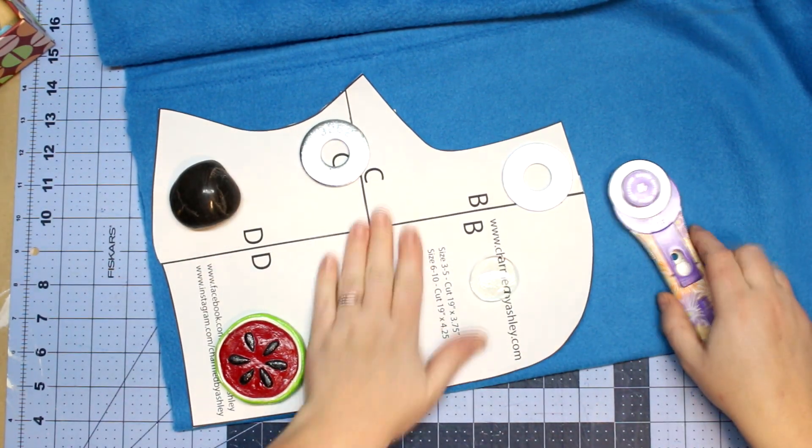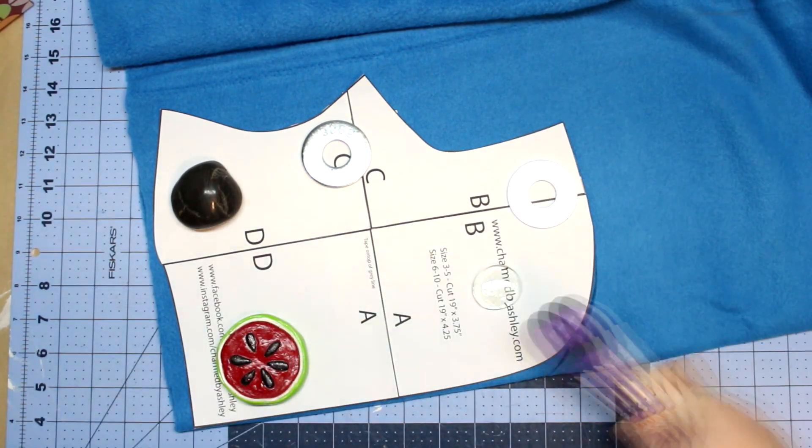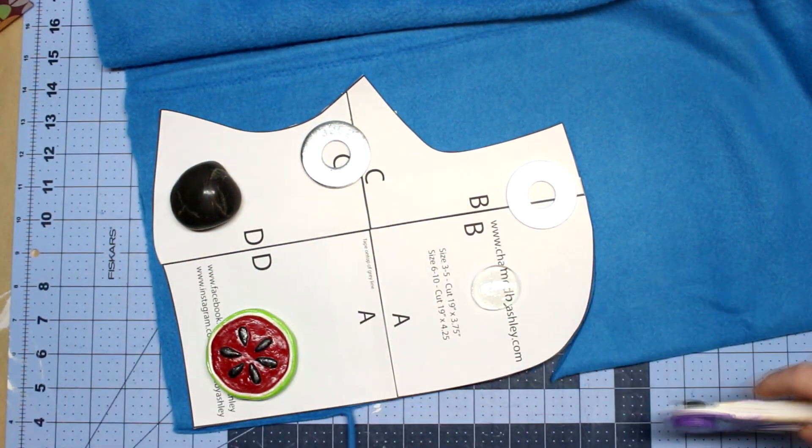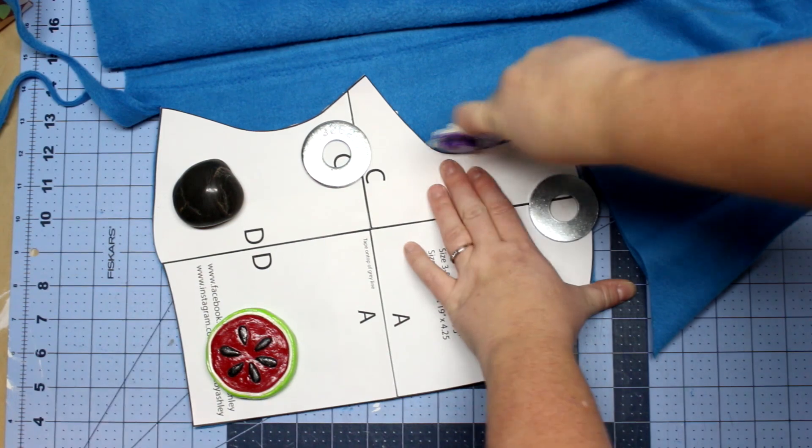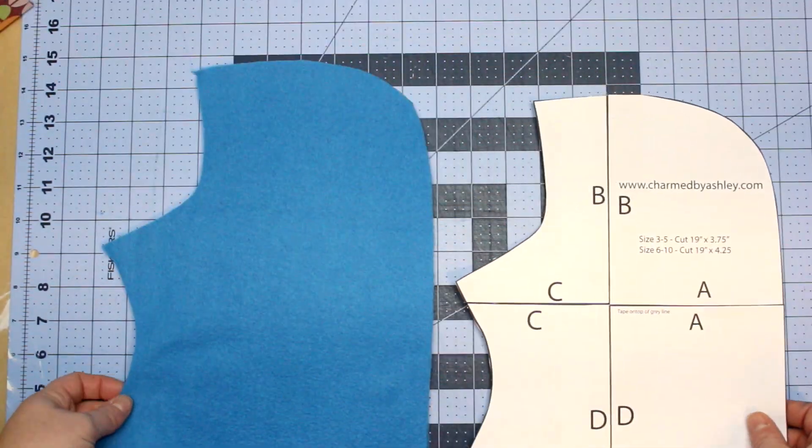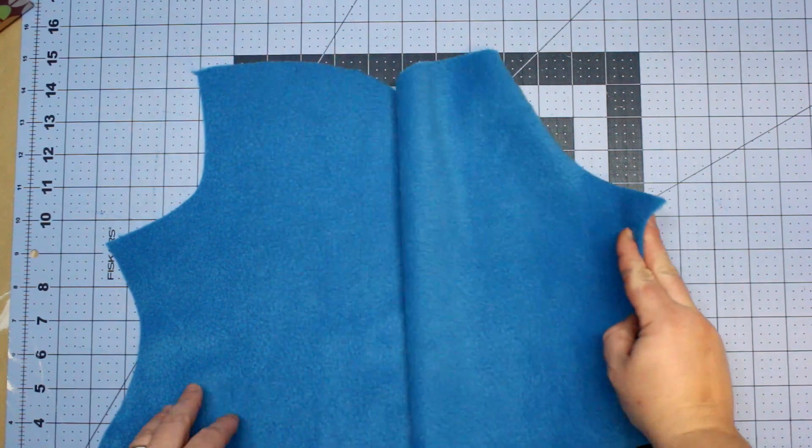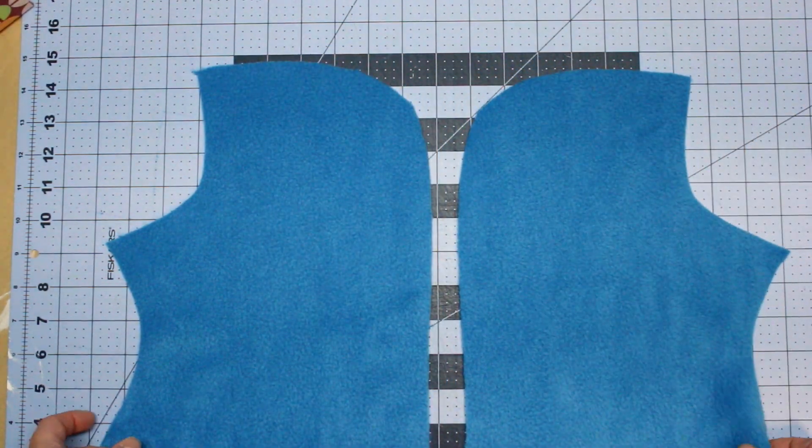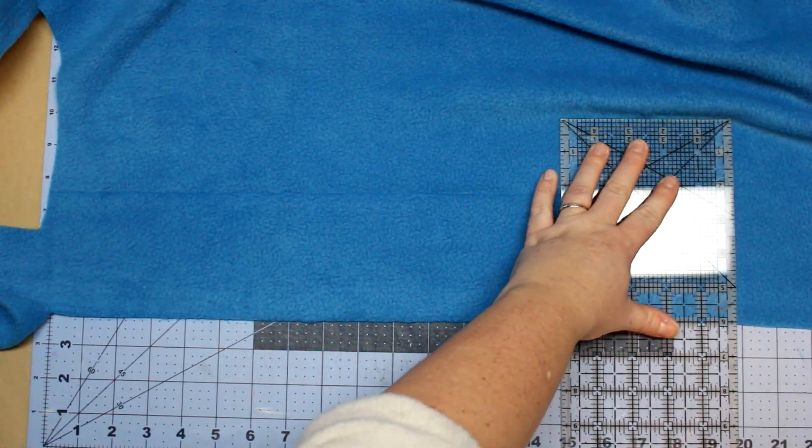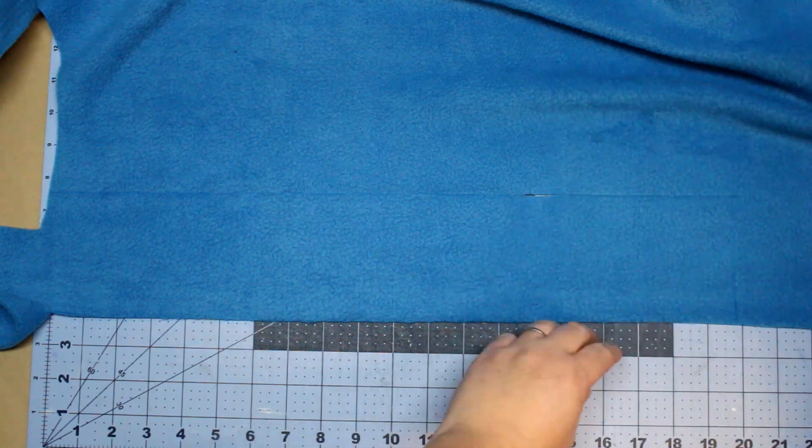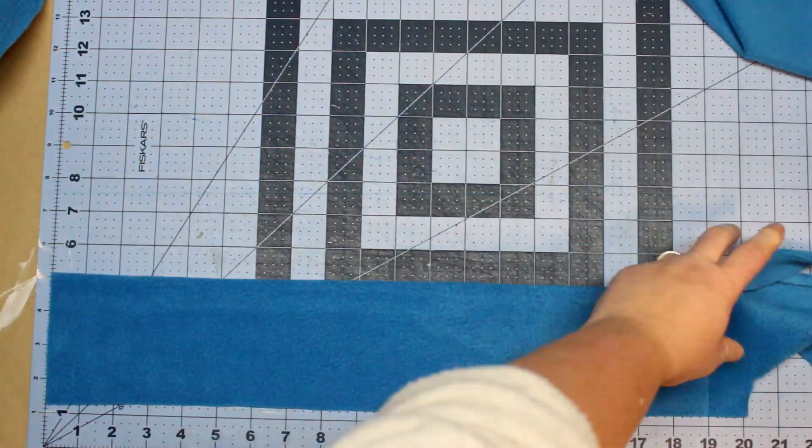I'm going to put my fabric with the right sides together and cut out my pattern piece. I want to have it mirrored for both sides of the head. With fleece, there will be a smooth side and then a more textured side. That soft, textured side that's a little more fluffy will be the right side of your fabric. Then I'm going to cut out the rectangle, which will be listed on the pattern piece. Again, I'm doing that along the selvedge because I want the stretch to go from side to side, not lengthways on that rectangle.